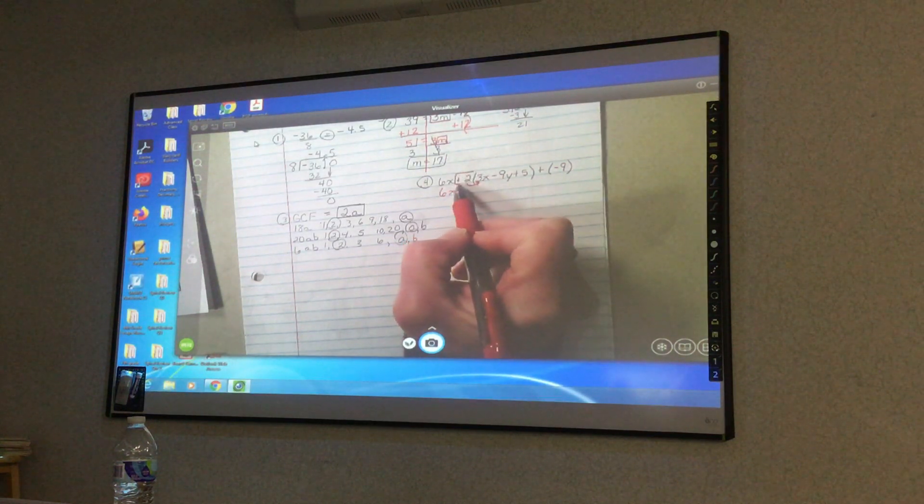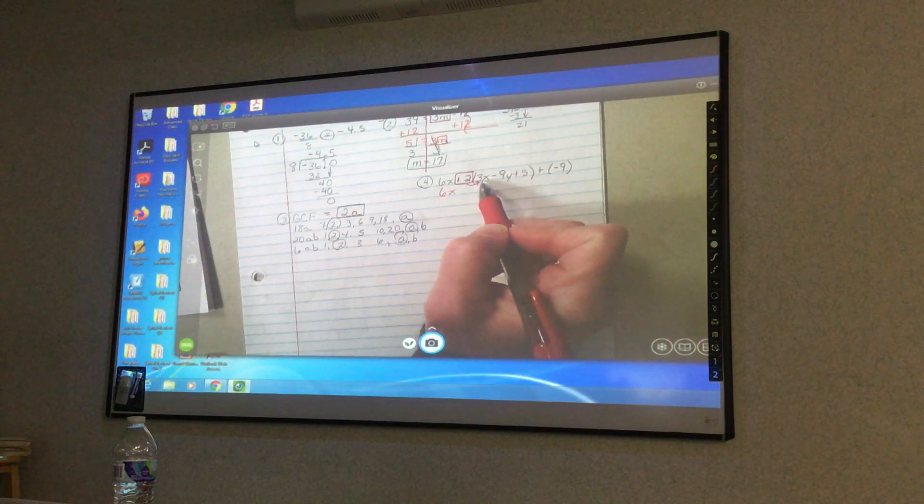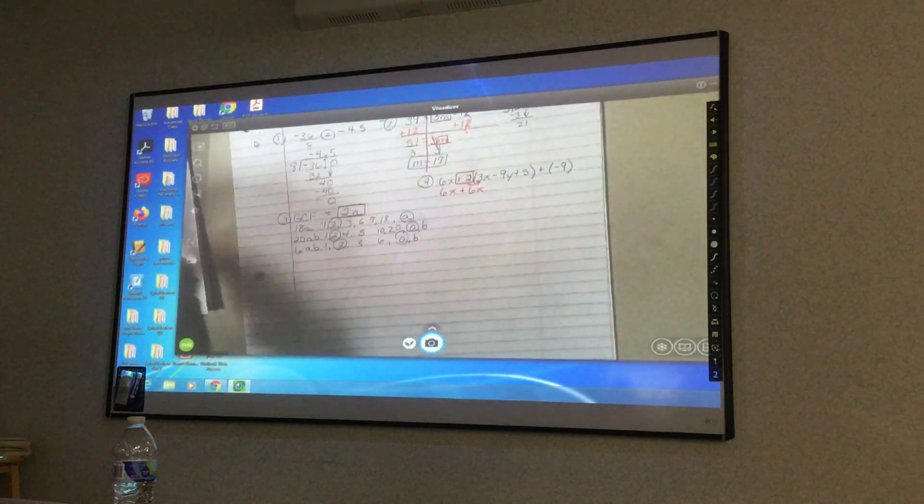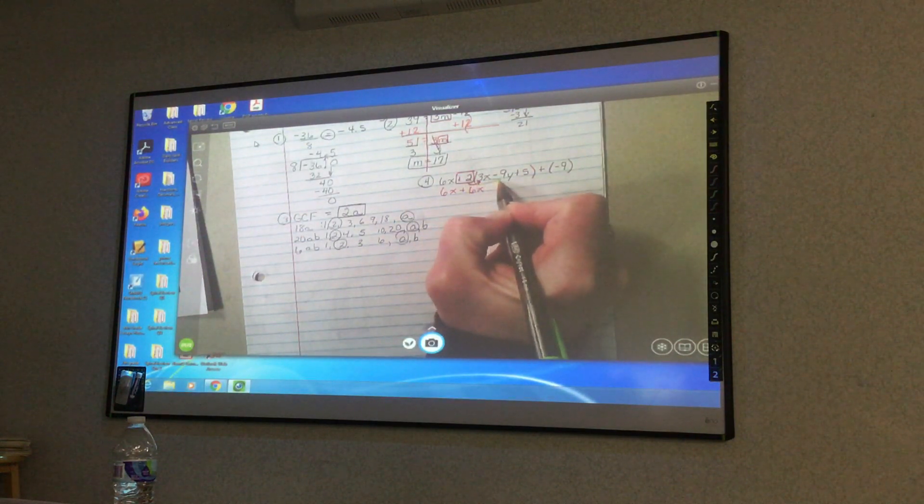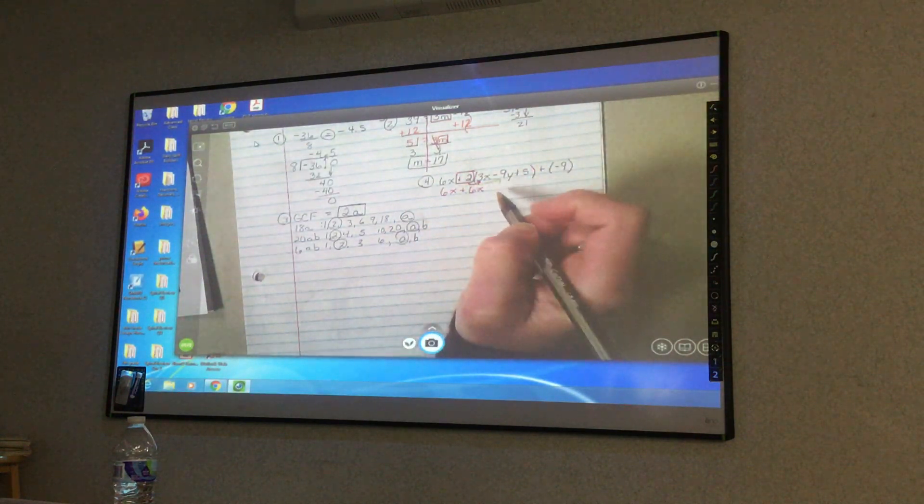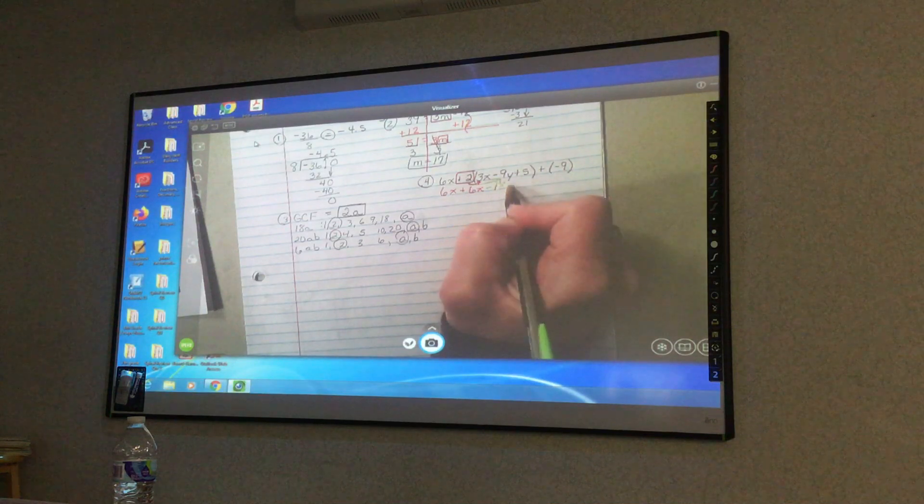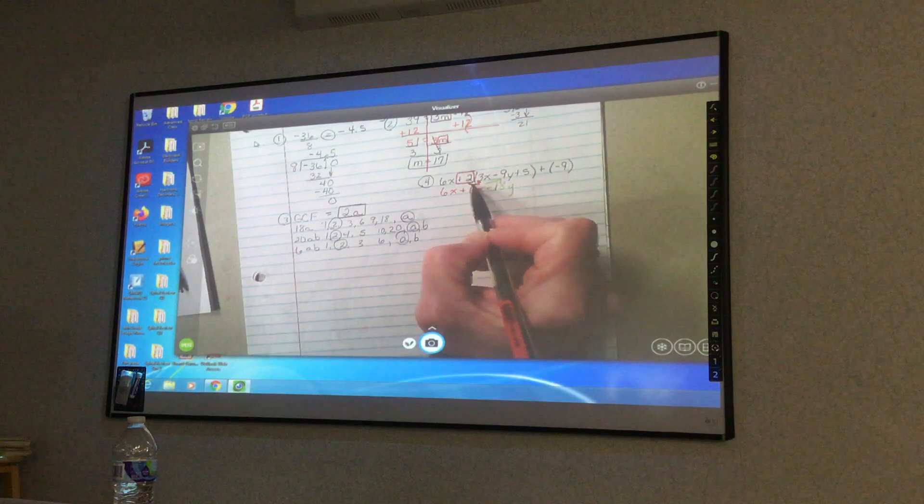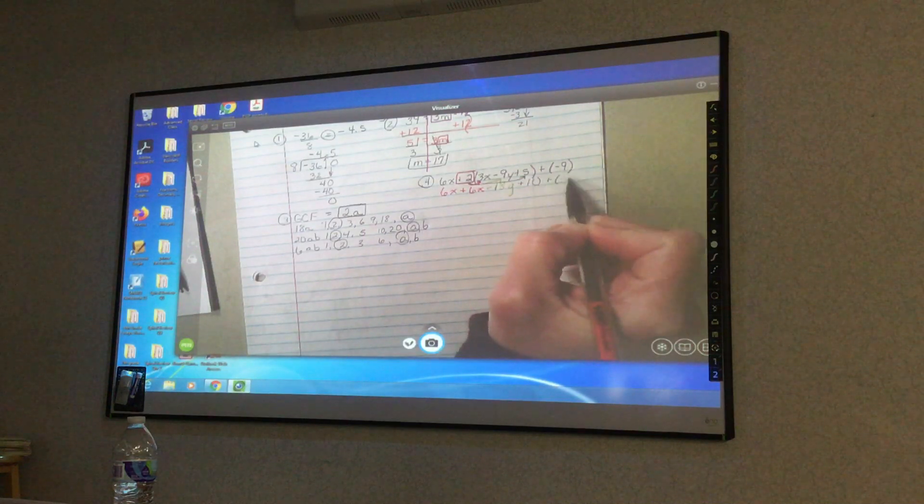Now when I do the distributive property, you take the sign in front. So I have positive 2 times positive 3, which would make positive 6x. Then I take positive 2 times negative 9. What's 2 times 9? 18. But one is negative, so I need to say negative 18y.